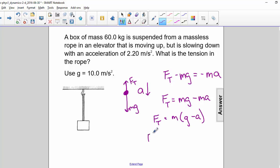So let's plug in our numbers. m is 60 kg, g will make 10, and a is 2.2. So the force of tension is equal to 468 newtons.